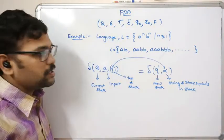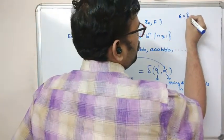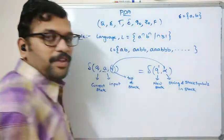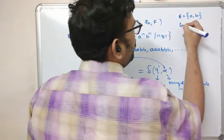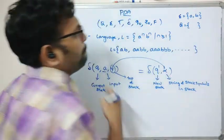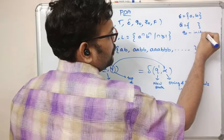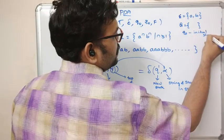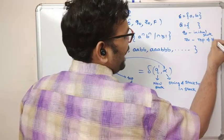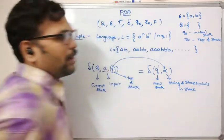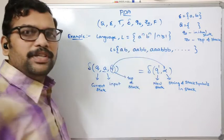Here, sigma = {a, b} — two input symbols. We need to find how many states are required. Let us take q₀ as the initial state. For any problem, consider z₀ as the top of the stack — not only z₀, you can use any other alphabet or symbol as the top of the stack.